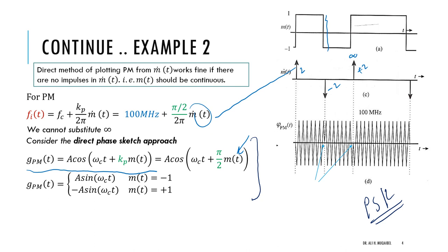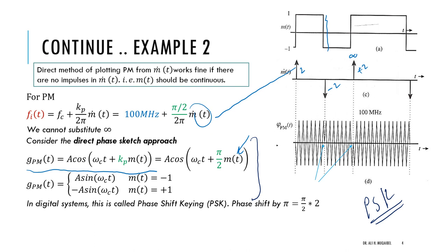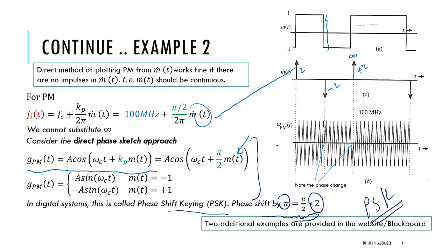If there had been no discontinuity we would not have needed this approach. Please practice these examples — you can pause the video and check the answers. If you have any questions, leave them in the comments. In digital systems this is called phase shift keying; the amount of phase shift in our case is π, one full pi, because the discontinuity is 2. More details on PSK and FSK will be covered in the digital section. Two additional examples are provided on the website and Blackboard.